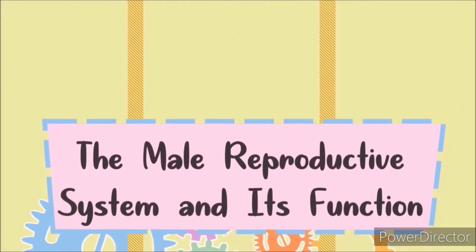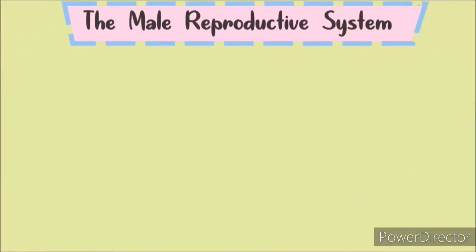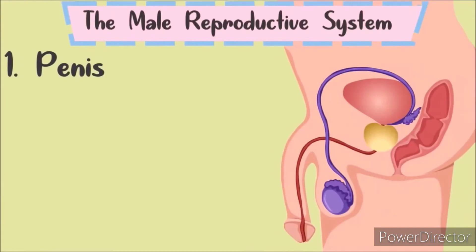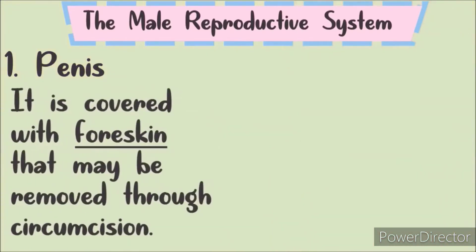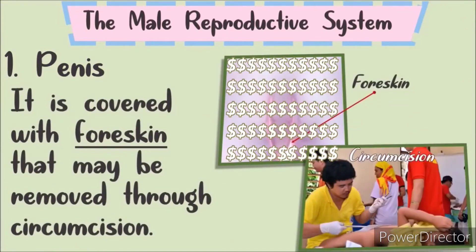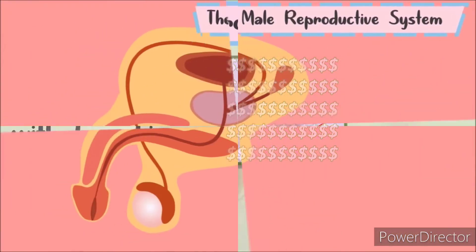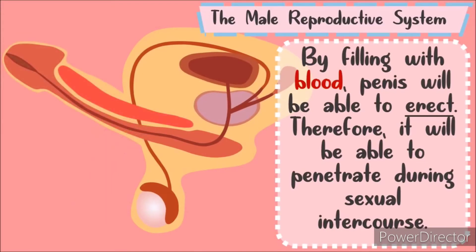Let's talk about the different parts of the male reproductive system and their functions. Number 1: The Penis. It is the external male organ with a glans. It is covered with a foreskin that may be removed through circumcision. By filling with blood, the penis is able to erect and penetrate during sexual intercourse.